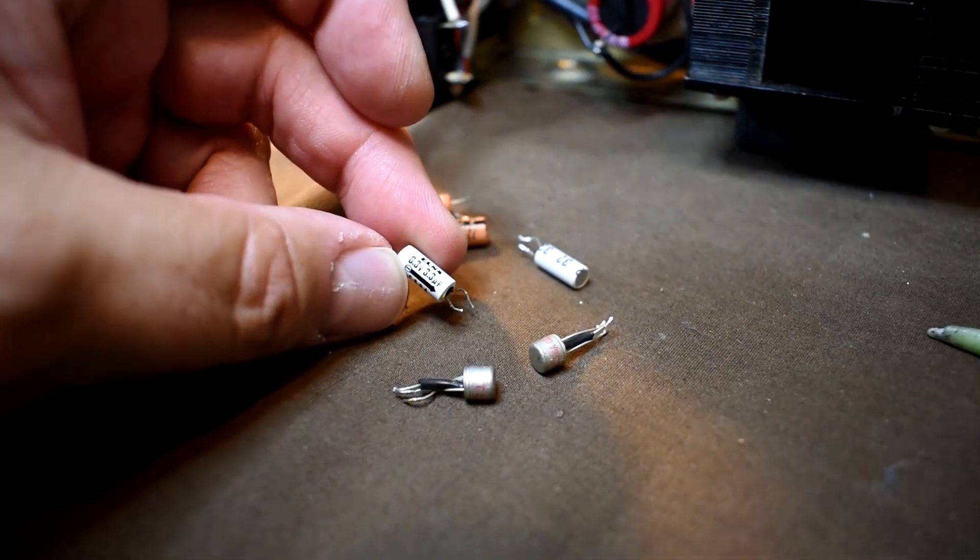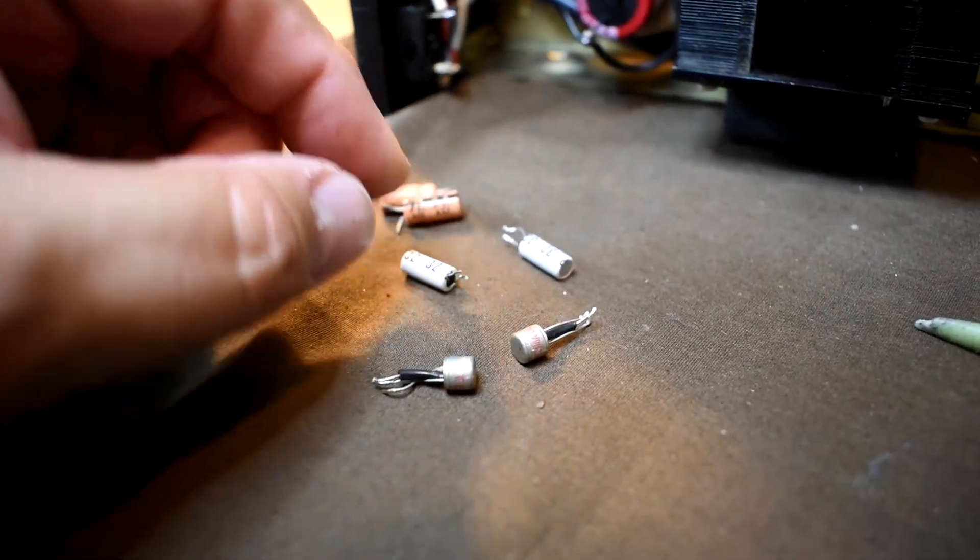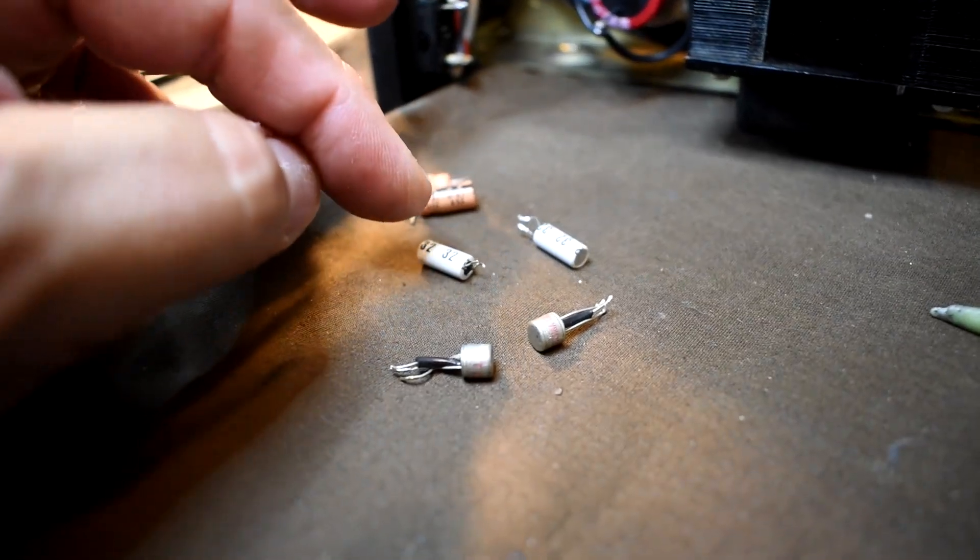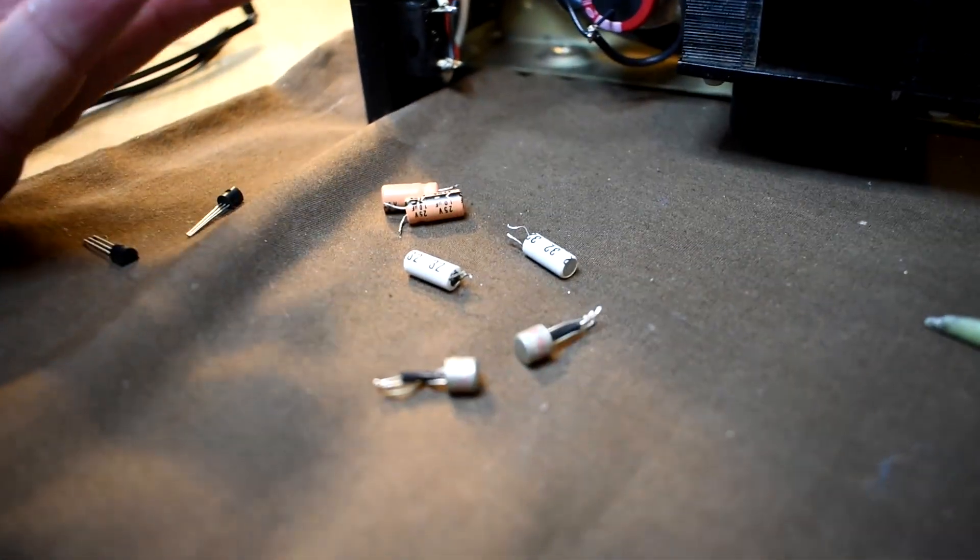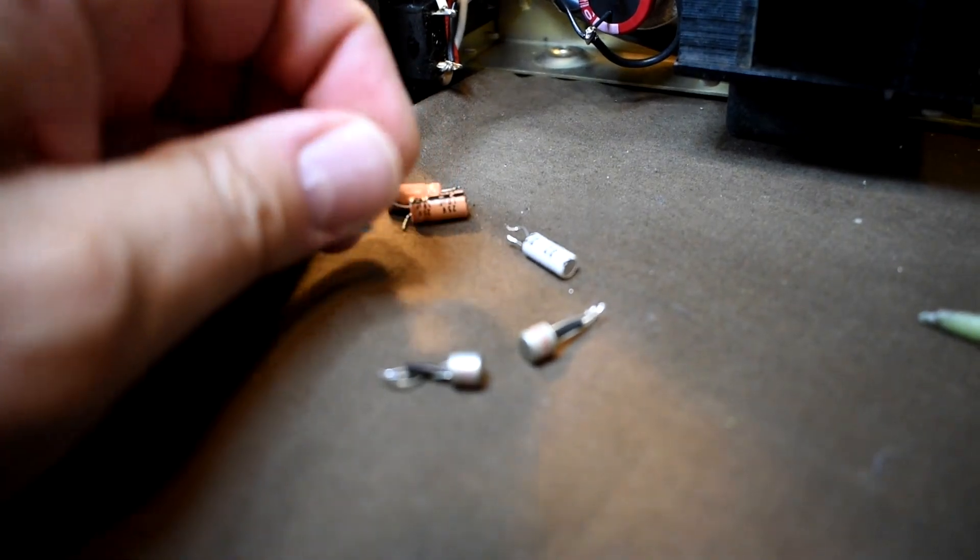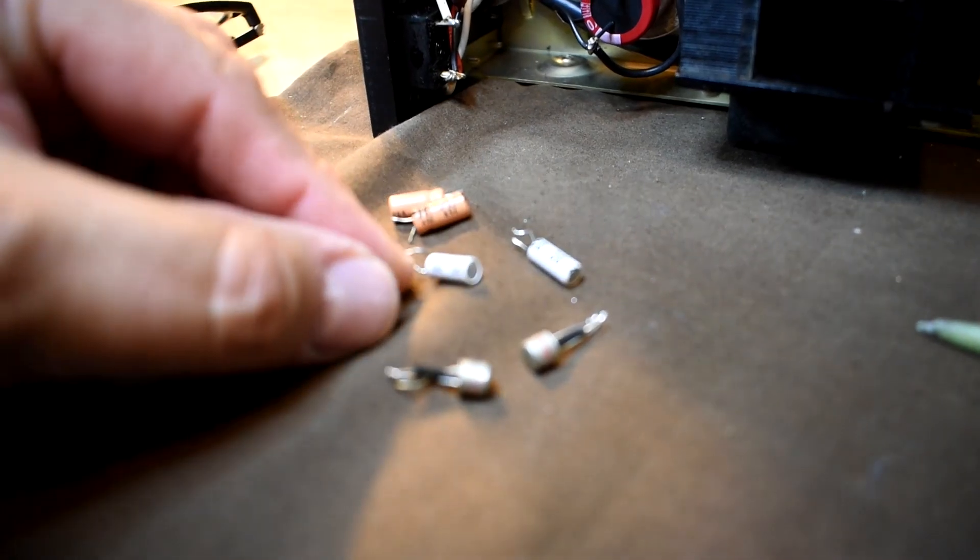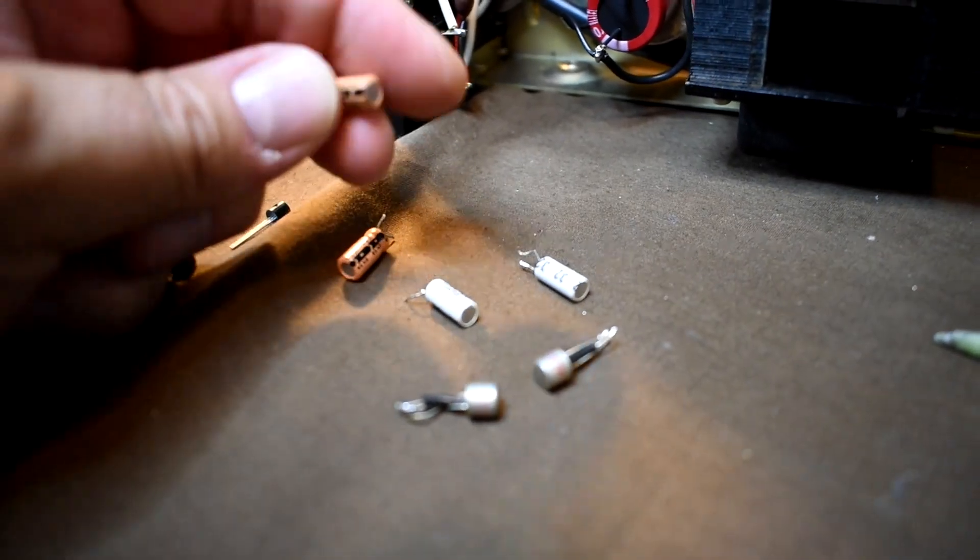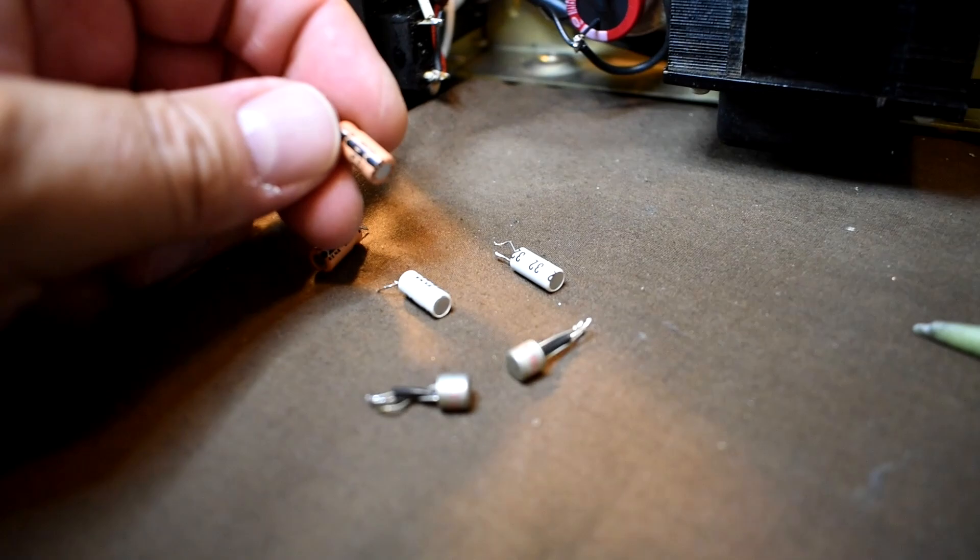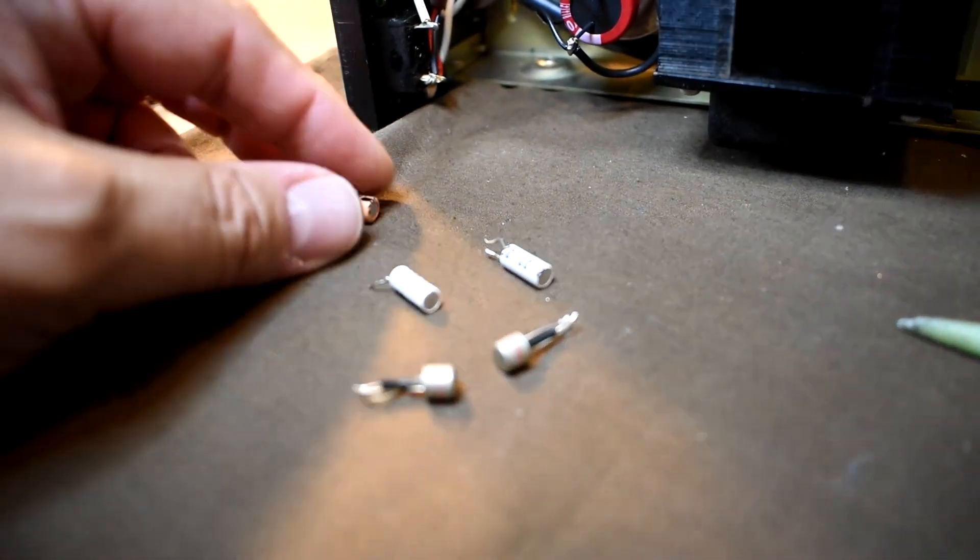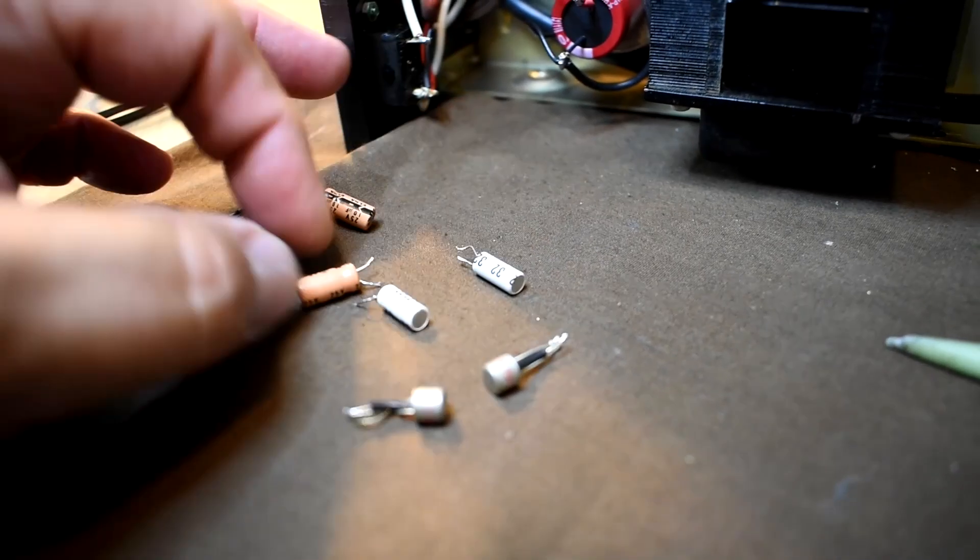3.3 microfarad white Elna caps. They're white because they're solid metal caps, a solid metal body. If you clip one in half, see what I mean? It's like just two strips of metal put together. Whereas these, it's foil, paper, and electrolyte.